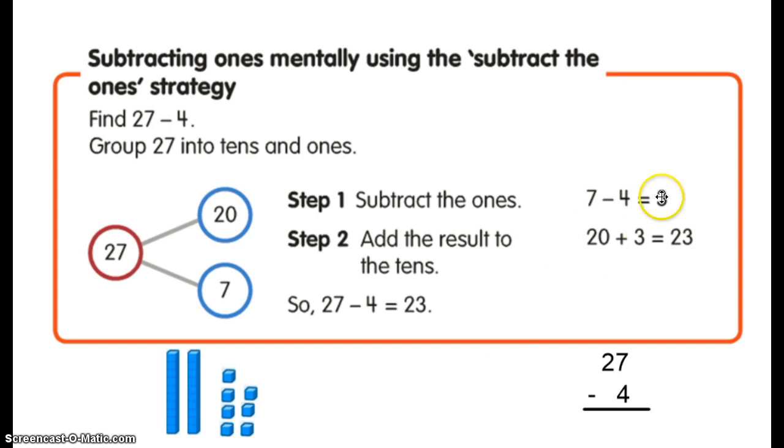This one is really difficult because a quick glance over here says, instead of when we do 27 take away 4, all of a sudden we have addition here, we're adding 20 and 3. What's that all about?